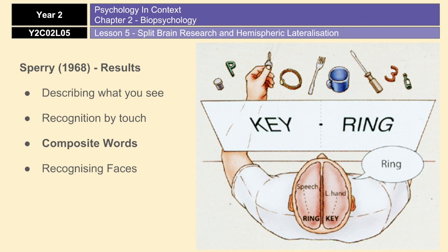In the next trial, Sperry used composite words — like 'key ring' — where one word would be flashed up in one visual field and the other word in the other visual field. What he found was that if 'key ring' was flashed up, patients would be able to say the word 'ring,' because 'ring' is in the right visual field connected to the left hemisphere. They wouldn't be able to say 'key,' but using their left hand they were able to draw a key. As soon as they saw what they were drawing, they could then say the word 'key' and put the two together — which emphasizes the language capabilities of the left hemisphere and also highlights the creative drawing capabilities of the right hemisphere.